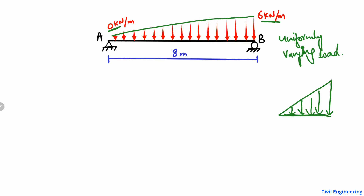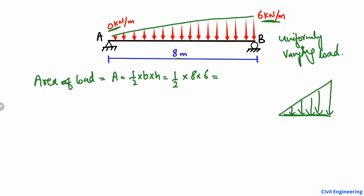First, find out the area of the load. The area of the load is the area of the triangle, which is half base into height. The base is 8 meters and the height is 6, so we get 24 kilonewton.